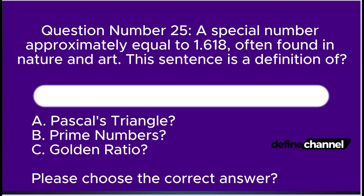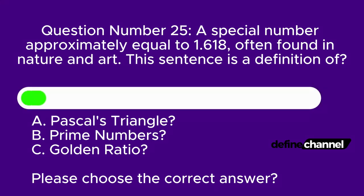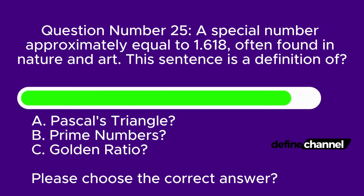Question number twenty-five. A special number approximately equal to 1.618, often found in nature and art. This sentence is a definition of: A. Pascal's triangle, B. Prime numbers, C. Golden ratio. Please choose the correct answer. Thank you for your answers — please visit again and leave a comment below.